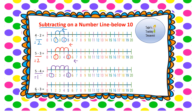Finally: 6 take away 3. We start on 6 — that larger number at the beginning of our question. Remember, when we subtract, our answer must always be smaller than the number we start with. So 6 take away 3: I've got 3 spaces to jump backwards: 1, 2, 3. I land on 3, so 6 take away 3 equals 3.